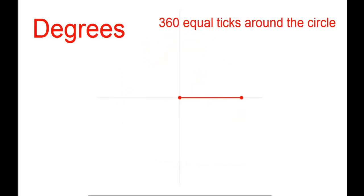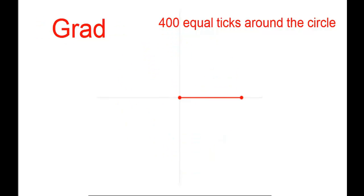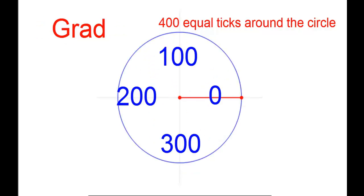We have the degree system where a full revolution is divided into 360 equal ticks around the circle, 90 degrees per quadrant. And the grad system where a full revolution is expressed in 400 equal ticks around the circle, 100 grads per quadrant.